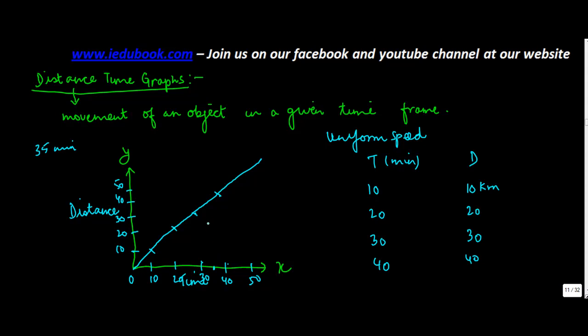You take 35 minutes here and draw a line parallel to the y-axis. Wherever this point intersects this particular line, you draw another parallel to the x-axis and you will find out that this is actually 35. When you do it on an actual graph it will come as 35.